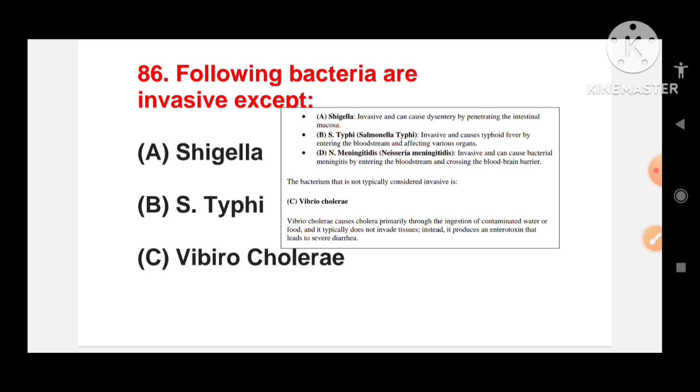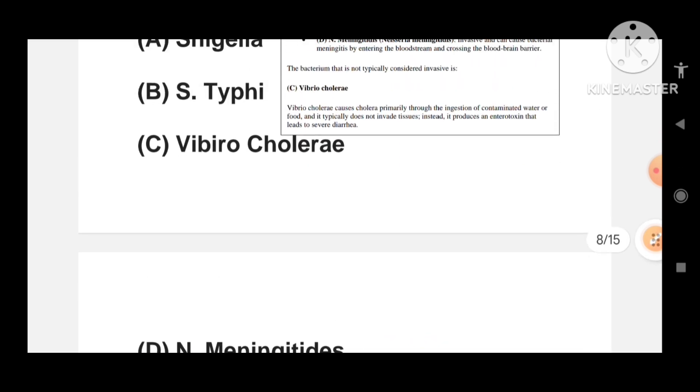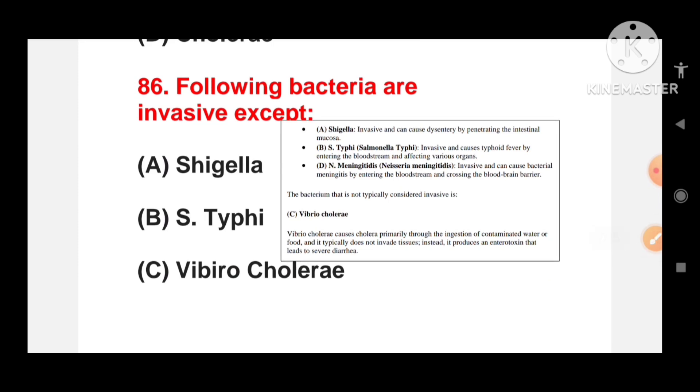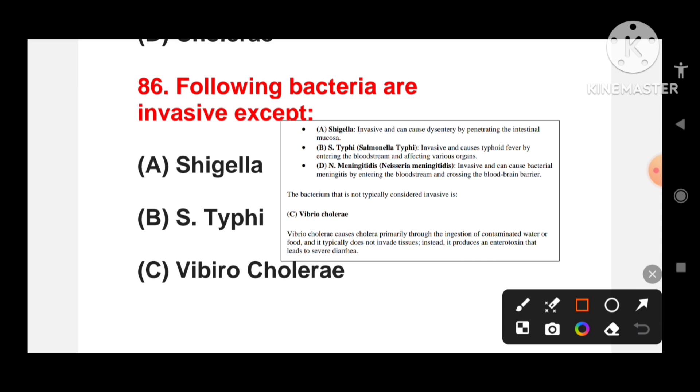Following bacteria are invasive except: Shigella, Salmonella typhi, N. meningitidis, or Vibrio cholerae? Shigella is invasive and can cause dysentery by penetrating the intestinal mucosa. Salmonella typhi is invasive and causes typhoid fever by entering the bloodstream and affecting various organs. N. meningitidis is invasive and causes bacterial meningitis by entering the bloodstream and crossing the blood-brain barrier. But Vibrio cholerae causes cholera primarily through the ingestion of contaminated water or food and it typically does not invade tissue. Vibrio cholerae does not directly invade tissue but works through contaminated ingestion of water and food and it produces an enterotoxin that leads to severe diarrhea.